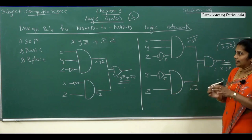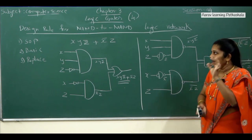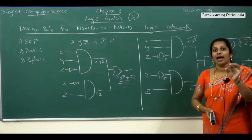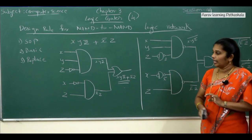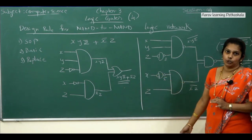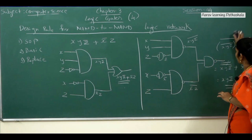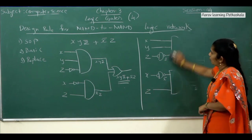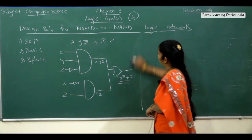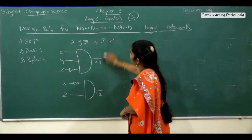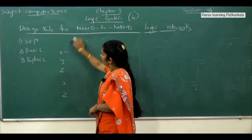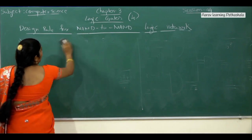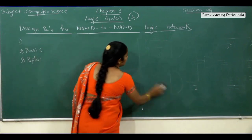This confirms that by using only NAND gates, we can write the circuit diagram. To summarize: convert the expression to sum of product form, write the circuit with basic gates, then replace all basic gates with NAND symbols. Now I am going to explain how to write the circuit diagram for NOR-to-NOR — that is, using only NOR symbols.